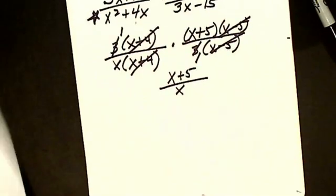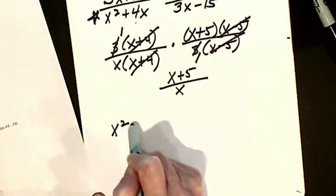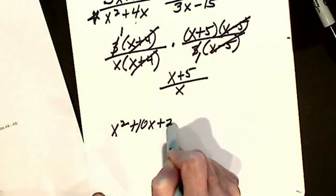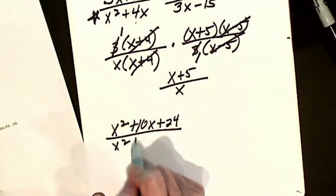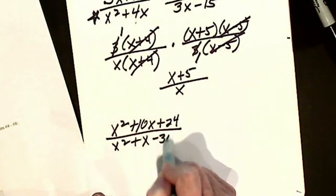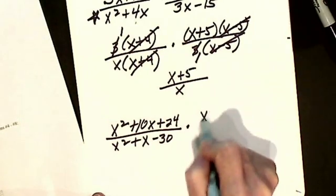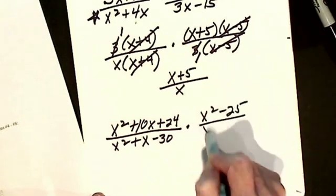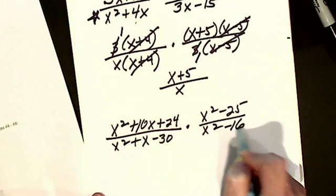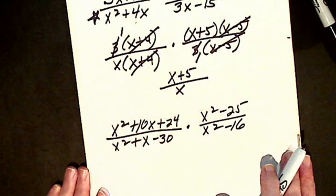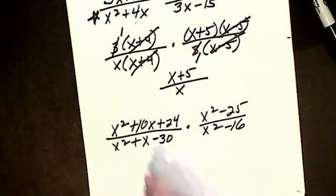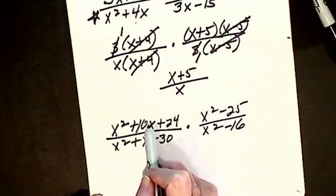Let's do another one. Here we go. x squared plus 10x plus 24 divided by x squared plus x minus 30 times x squared minus 25 over x squared minus 16. So I've got to factor and cancel.